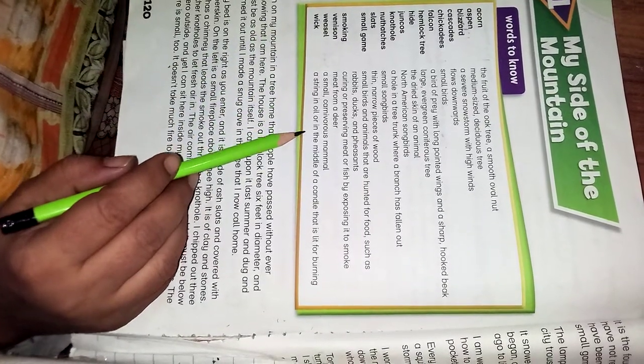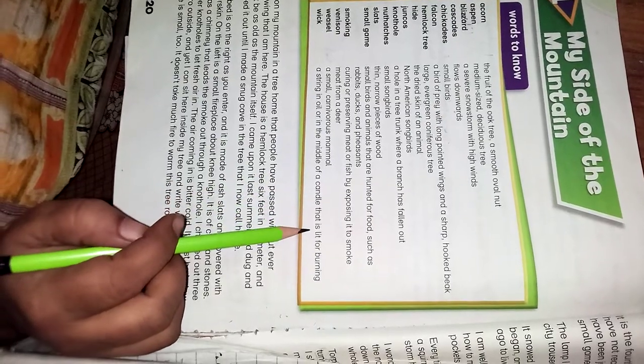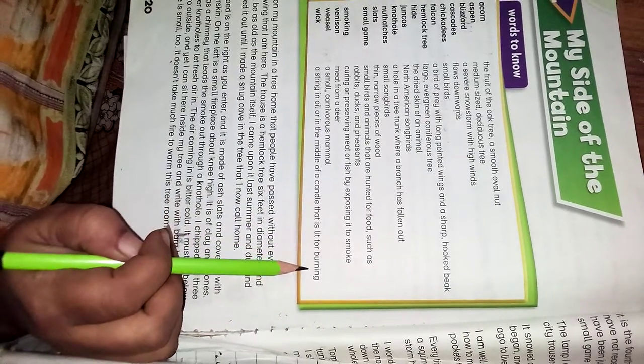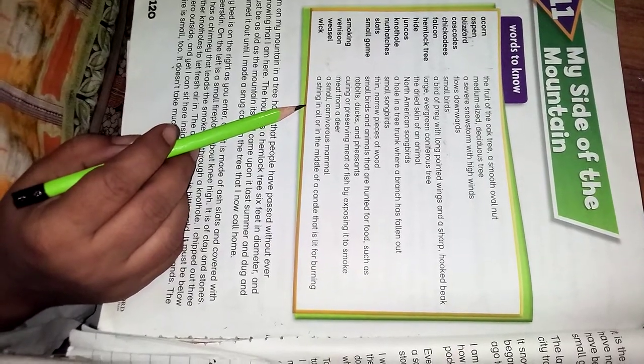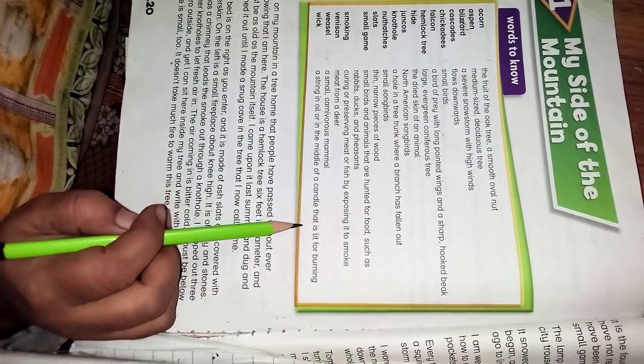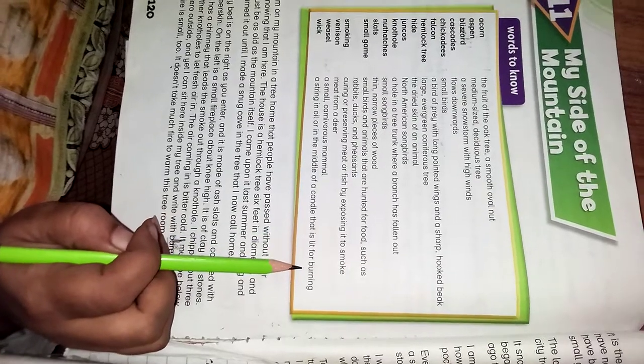Wick: the string in oil or in the middle of a candle that is lit for burning. Jalane wali dori jo oil mein ya candle mein hoti hai.